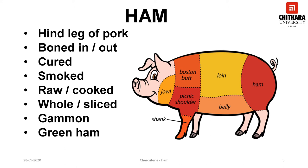Gammon is the same joint as ham, but it is left attached to the side during bacon curing and cut from it afterwards. In other words, gammon is basically a raw ham which is cured but not smoked. Gammon is a term commonly used by the British for fresh pork leg, so a gammon has to be cooked before it is consumed. Many times a gammon is also called green ham.